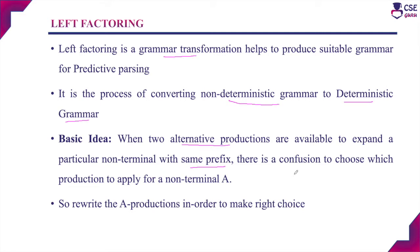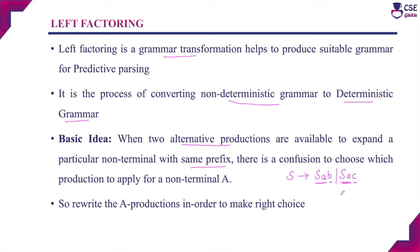For example, consider the production: S derives S A B or S A C. It consists of two productions with the common prefix. The first production is S A B and the second production is S A C. These two productions share the common prefix S A, while the unique symbol in the first production is B and the unique symbol in the second production is C. So, if you are considering these productions, the parser will get confused about which is the right production to apply for the non-terminal.